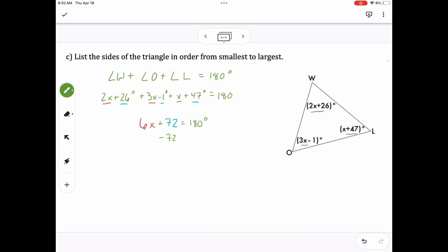Putting the like terms together, I get 6X for all the X's and 72 for all the numbers. And then I want to solve for X, so I subtract both sides by 72 degrees, and then I'm going to divide both sides by 6, and that gives me 18 for X.